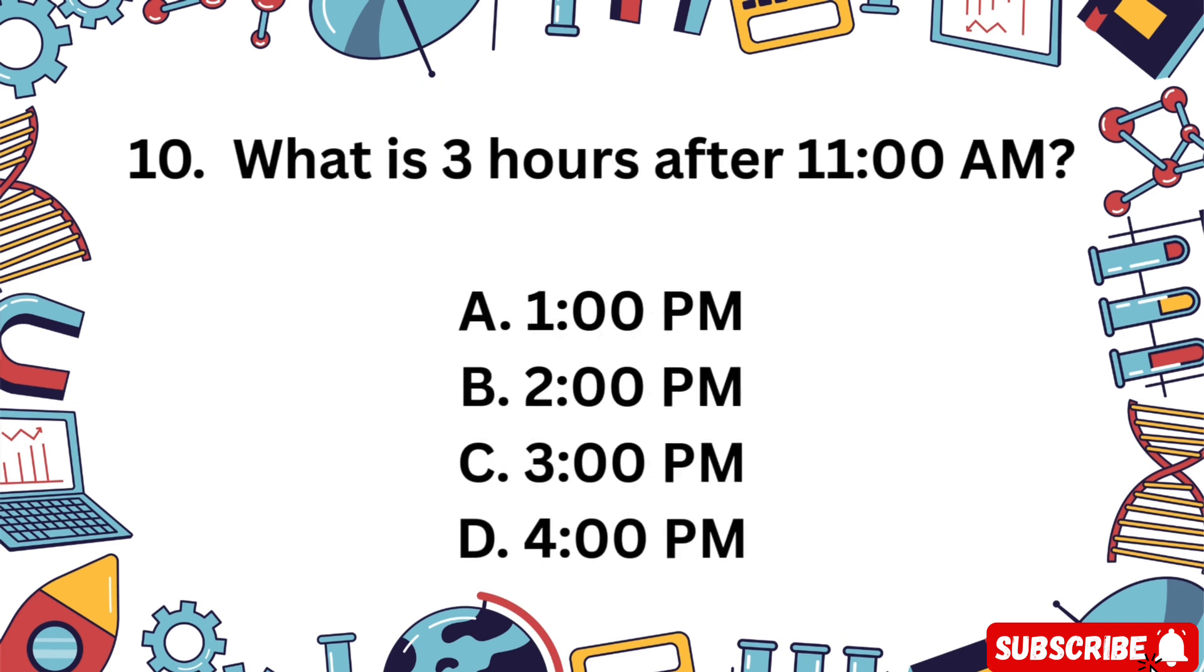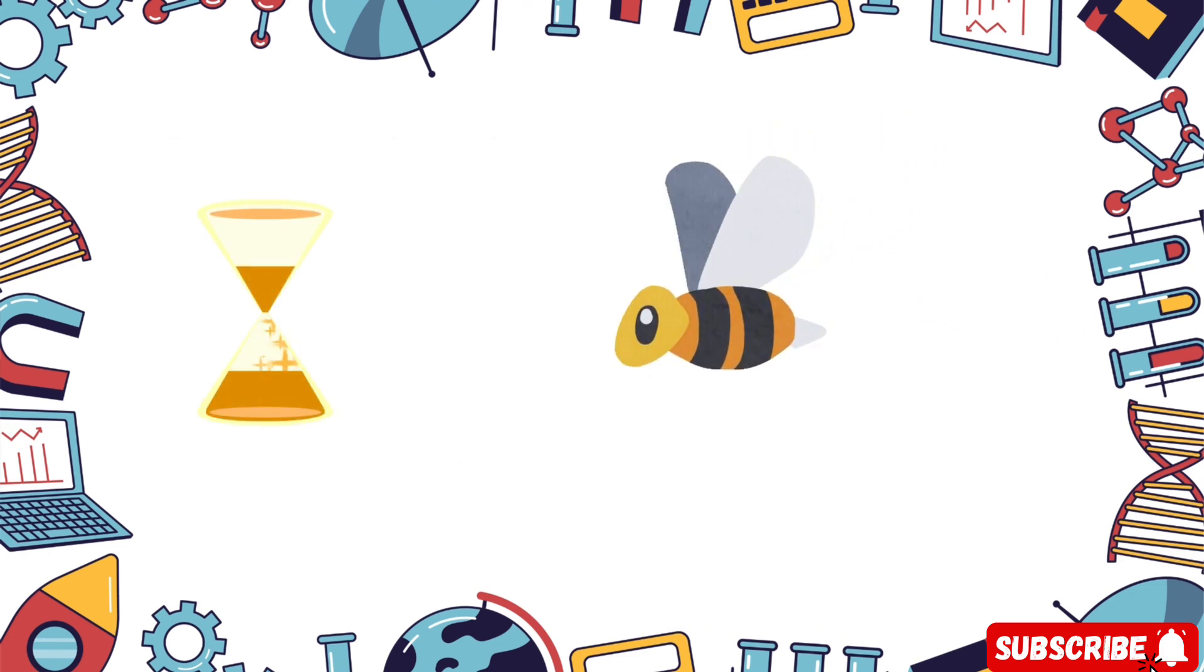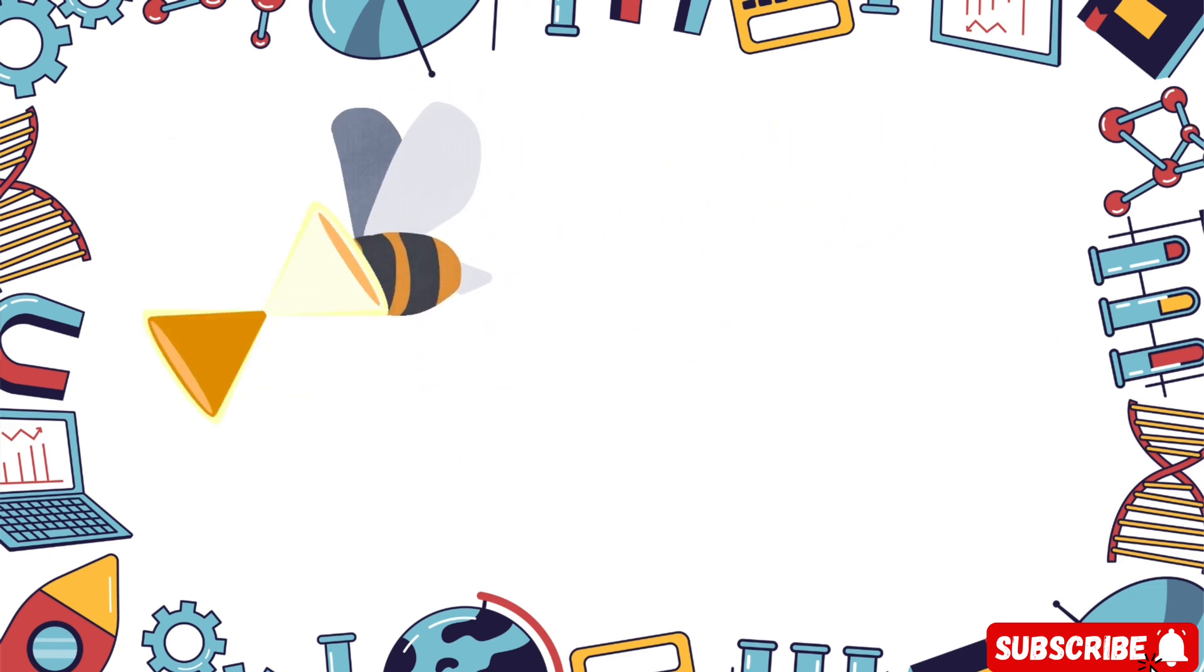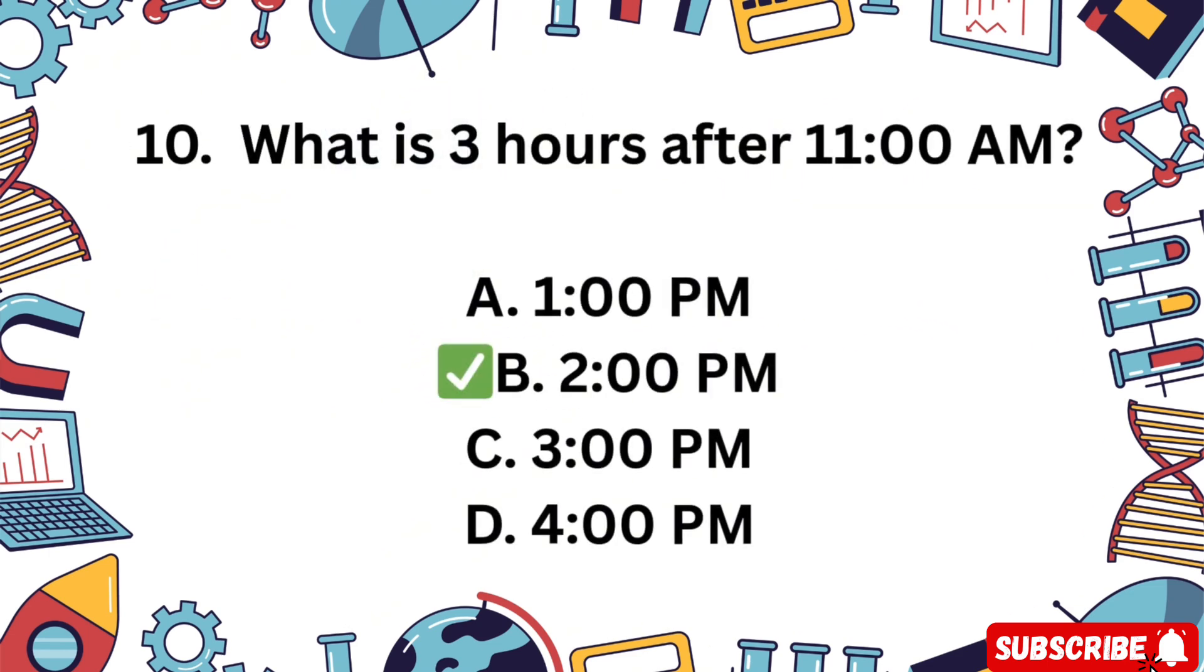Question 10. What is 3 hours after 11:00 AM? A 1 PM, B 2 PM, C 3 PM, D 4 PM. Time's ticking. 5 seconds. The correct answer is B 2 PM.